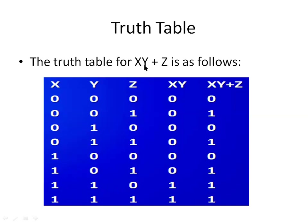In the expression, first we evaluate X AND Y. X and Y are multiplied: 0·0=0, 0·0=0, 0·1=0, 0·1=0, 1·0=0, 1·0=0, 1·1=1, and 1·1=1.